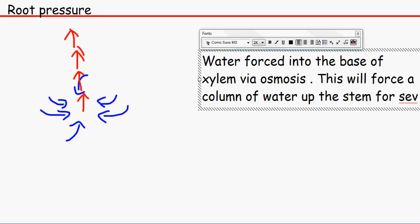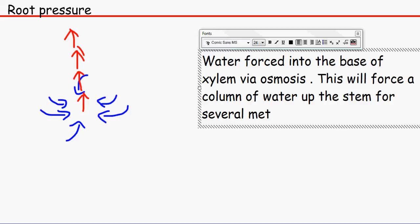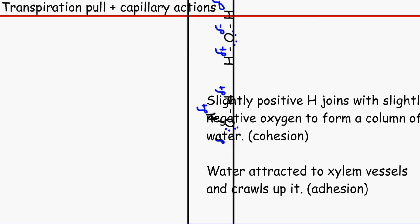Water is forced into the base of the xylem through osmosis, which forces a column of water up the stem for several meters. This is most common amongst tall trees like the oak tree. If OCR asks which preferred process a oak tree would use to move water and ions up the xylem, it would prefer root pressure. Remember, plants like sunflowers can also use transpiration pull and capillary action.